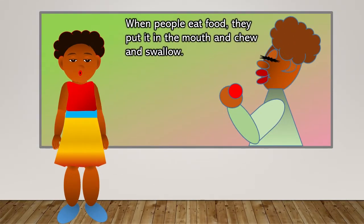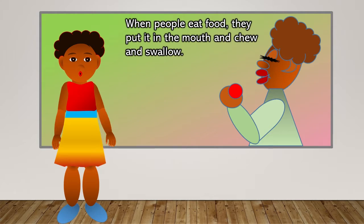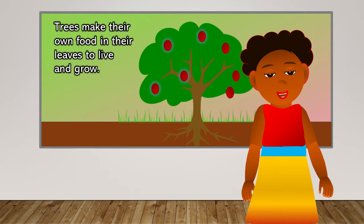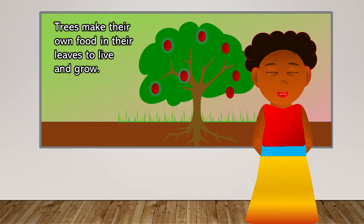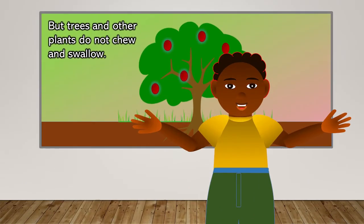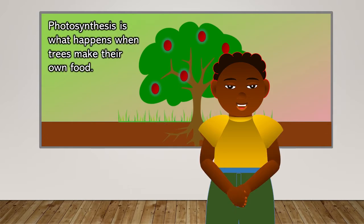When people eat food, they put it in the mouth and chew and swallow. Trees make their own food in their leaves to live and grow. But trees and other plants do not chew and swallow.